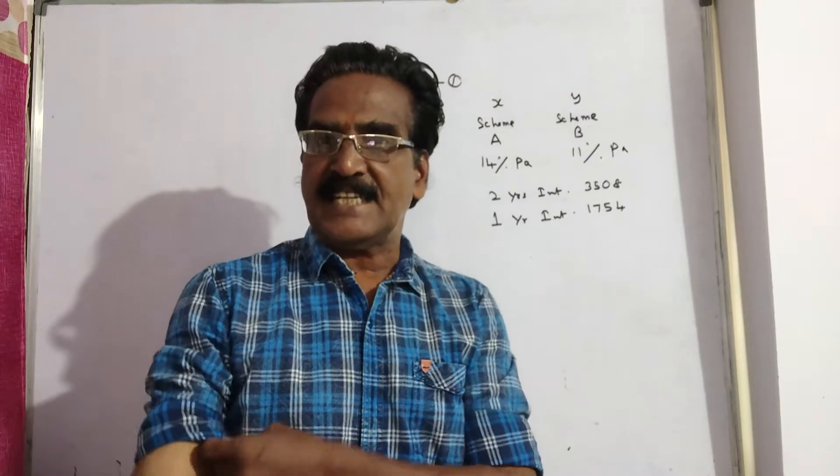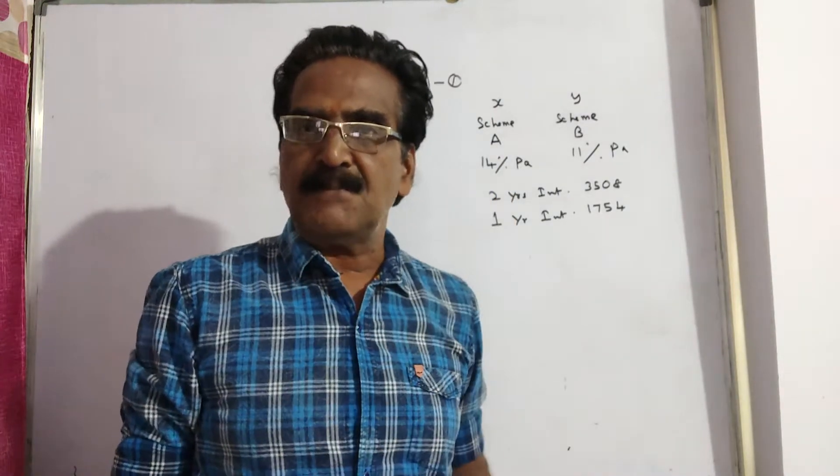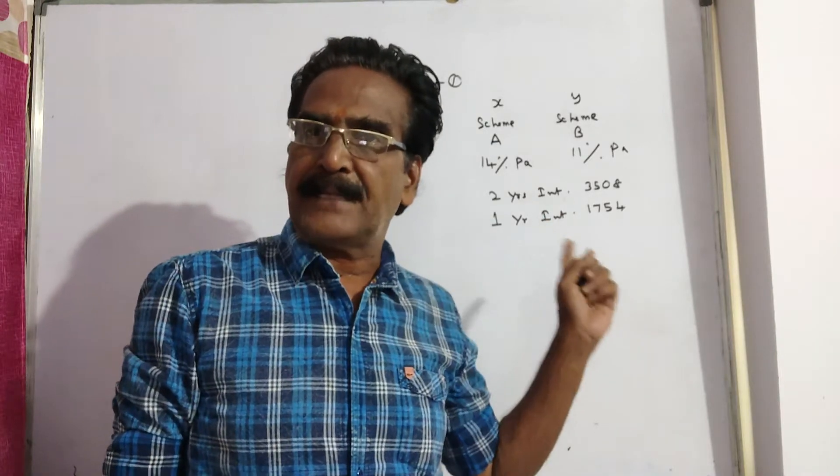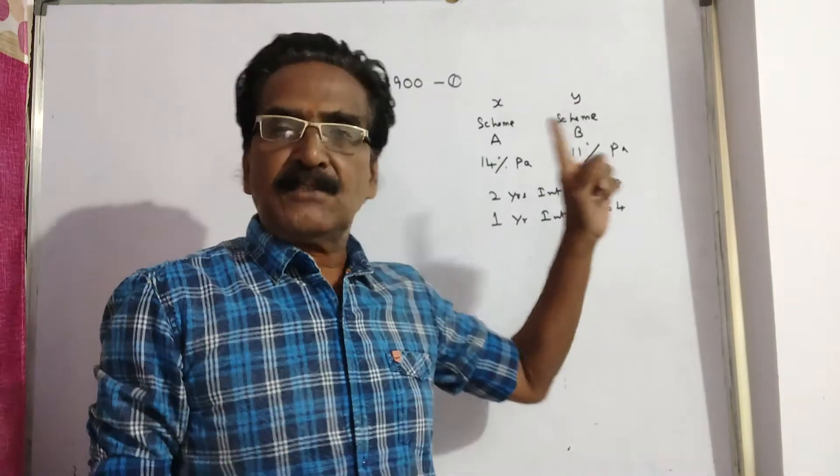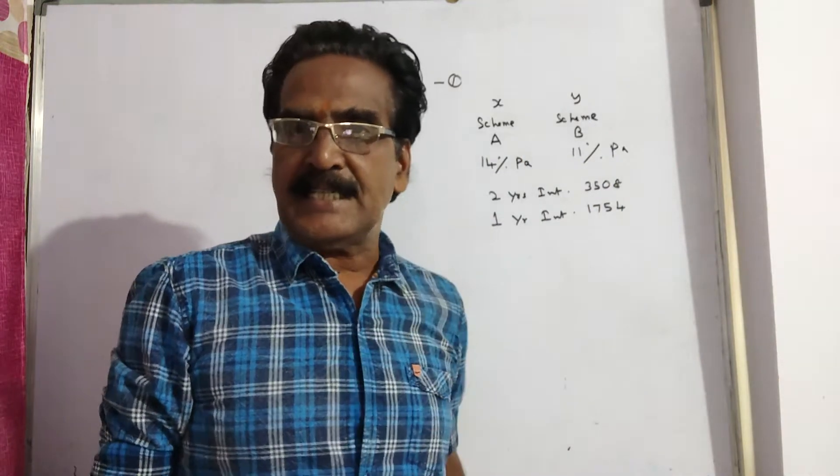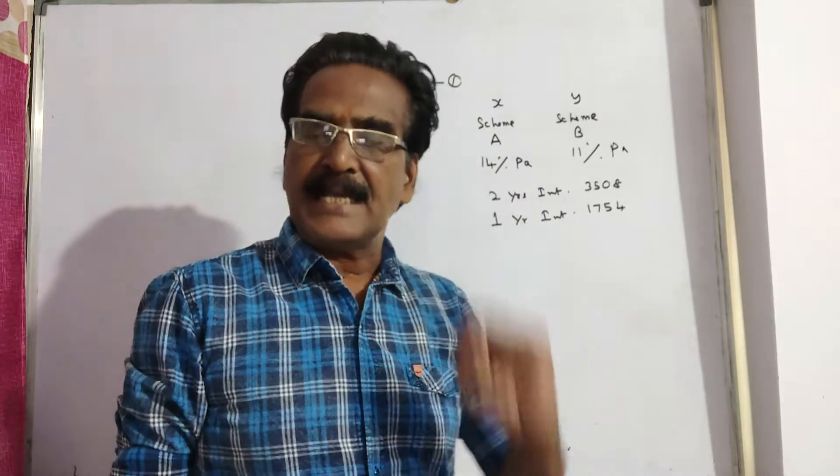Mr. Thomas has invested an amount of rupees 13,900 in two different schemes A and B with 14% per annum and 11% per annum simple interest. He earned rupees 3,508 in two years. Then the question is what is the sum invested in scheme B?